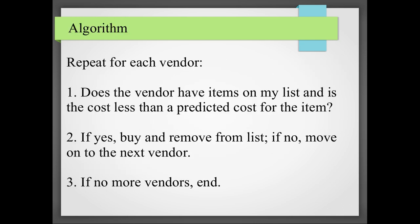For this, I have given some 3 steps for the algorithm. So many vendors will be there in the market. First constraint which you are going to take is money, how much you are going to spend. First we have to see, does the vendor have the item on my list and it costs less than the predicted cost of the item? You will be having some predicted cost for some item.